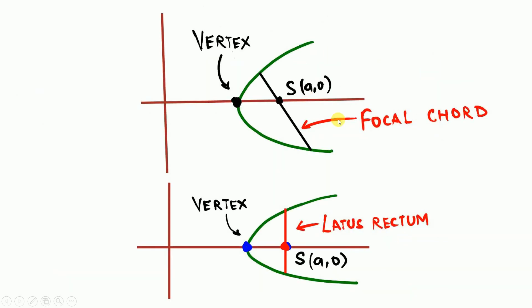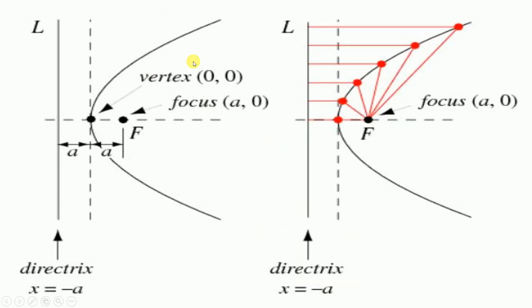A focal chord is a chord passing through the focus S. When this focal chord becomes perpendicular to the principal axis, it is called the latus rectum. The point where the parabola meets the principal axis is called the vertex or center — both mean the same thing.